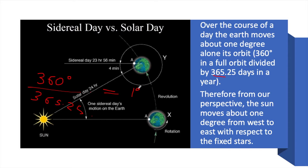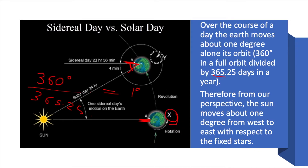From our perspective, the Sun moves about 1 degree from west to east each day. So in one day, the Sun changes its position by 1 degree when the Earth moves from one position to another. That is what constitutes the difference between sidereal day and solar day.